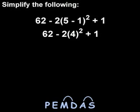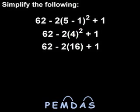Next comes the exponent, so we have 4 squared, which is 4 times 4, or 16. Rewriting the problem again, we have 62 minus 2 times 16 plus 1.